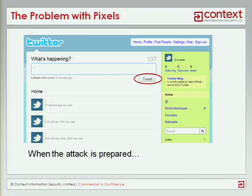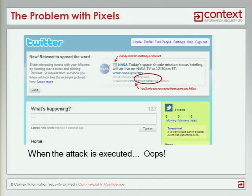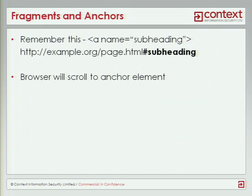But what happens if the page changes and the target moves? If this is an attack that someone has prepared, and the page changes when the user actually does it, then they'll click on the wrong part of the page. So how can we get around this? One method I've come up with is to use fragment positioning.